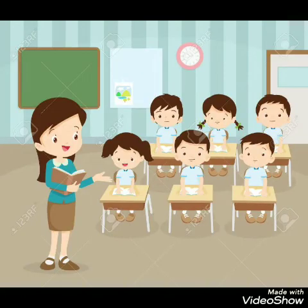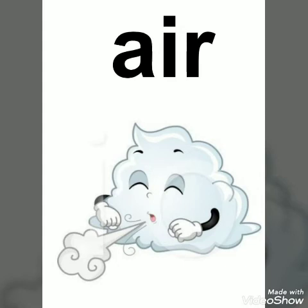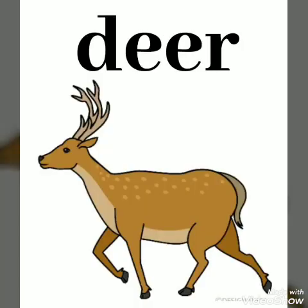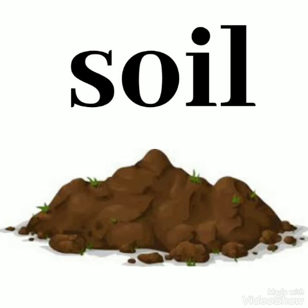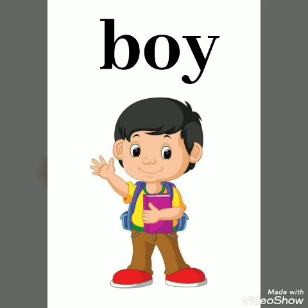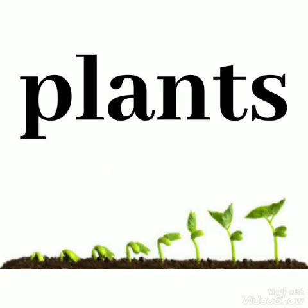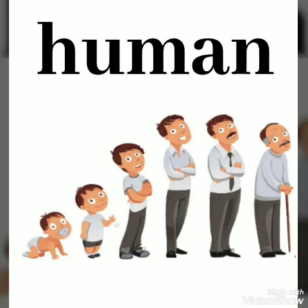Now we are going to learn a few new words for reading practice. A-I-R Air. B-I-R-D Bird. M-O-U-N-T-A-I-N Mountain. D-E-E-R Deer. R-A-B-B-I-T Rabbit. S-O-I-L Soil. B-O-Y Boy. F-I-S-H Fish. P-L-A-N-T-S Plants. A-N-I-M-A-L-S Animals. H-U-M-A-N Human.